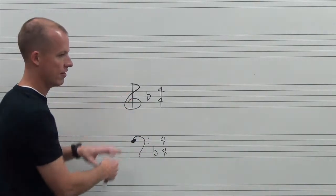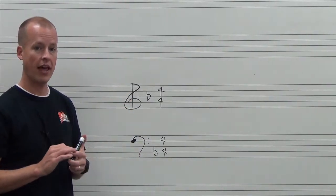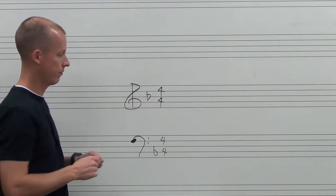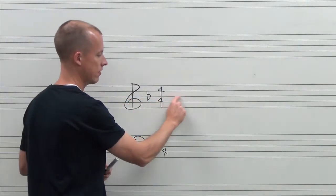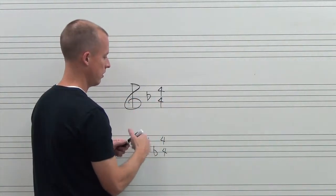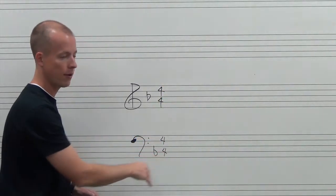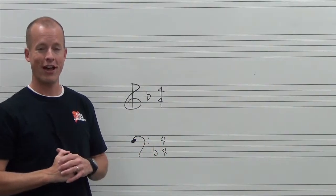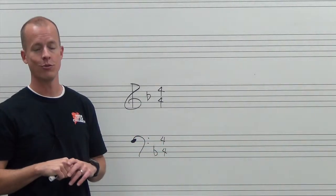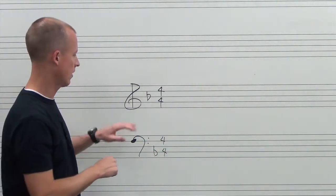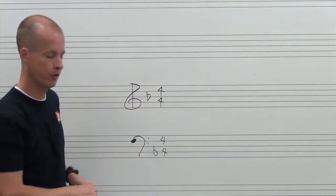So according to this, every B will be played flat. Everything else will be natural. So not just B's here, but it could be B's below the staff or B's above the staff. Same down here. All B's will be flat, and all the other notes will be natural. And this is from our key signature.